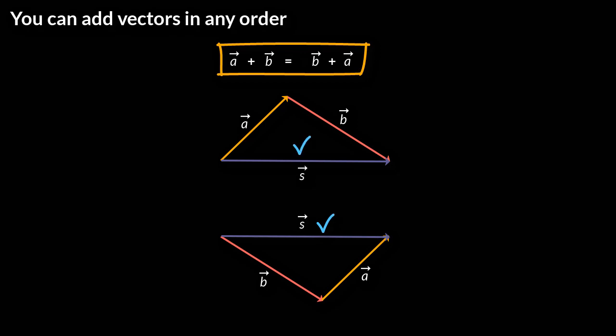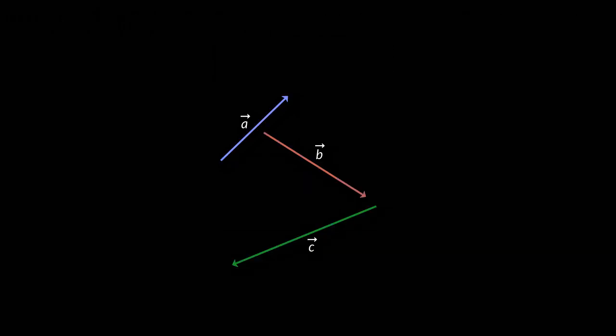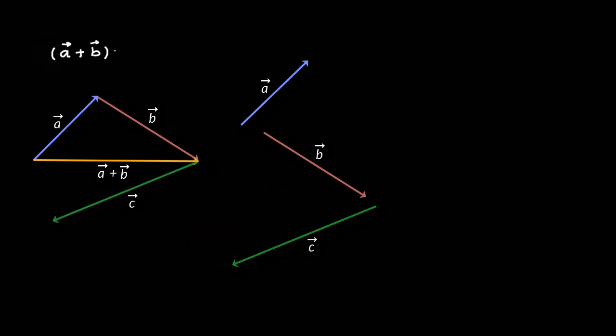The second property is that if you have more than two vectors, you can add them in any order. That is, if you have vector A, B and C, then you can first add vector A and B and then add resultant to vector C, or you can add vector B and C and add the result into vector A. The final result would be the same. So the order in which you do does not matter. So let us add A to B and what you get is A plus B as a resultant vector. And now let us add this to C and what you get is A plus B plus C as the final resultant vector.